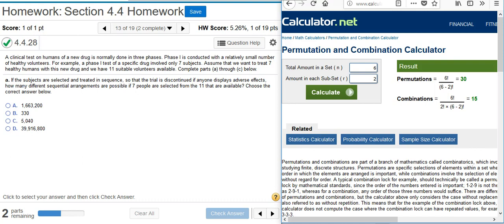Here's our problem statement: A clinical test on humans of a new drug is normally done in three phases. Phase one is conducted with a relatively small number of healthy volunteers. For example, a phase one test of a specific drug involved only seven subjects. Assume that we want to treat seven healthy humans with this new drug and we have eleven suitable volunteers available. Complete parts a through c below.